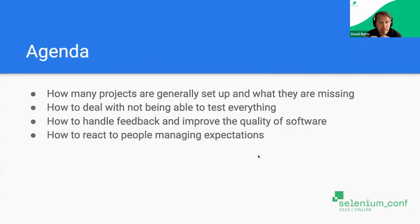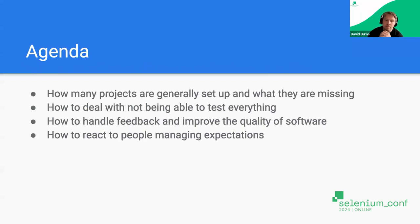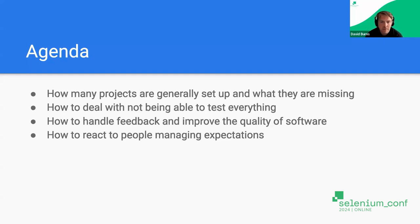This is going to be the agenda. We'll talk about how projects are generally set up from the start and what I think they're always missing. How to deal with not being able to test everything — and this is a really big one. How to handle feedback and improve quality of software, which I think is one of the biggest things I see as an engineering manager and someone who works a lot with community. And then when other people are managing expectations, how to handle that situation, because it's important.